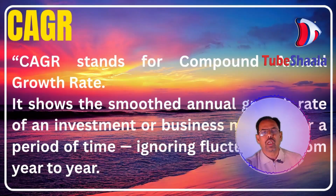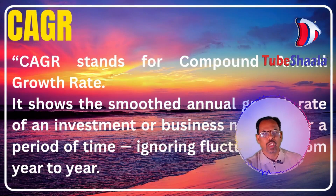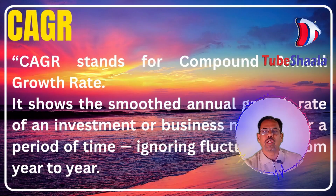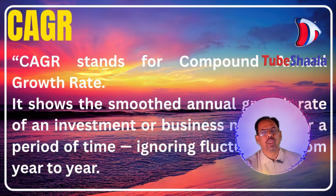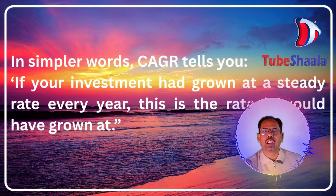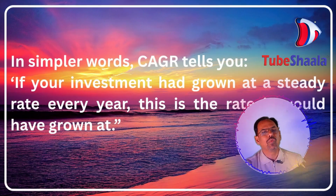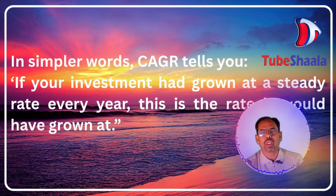CAGR stands for Compound Annual Growth Rate. It shows the smooth annual growth rate of an investment or business metric over a period of time, ignoring fluctuations from year to year. In simpler words, CAGR tells you: if your investment had grown at a steady rate every year, this is the rate at which it would have grown. The formula of CAGR is: